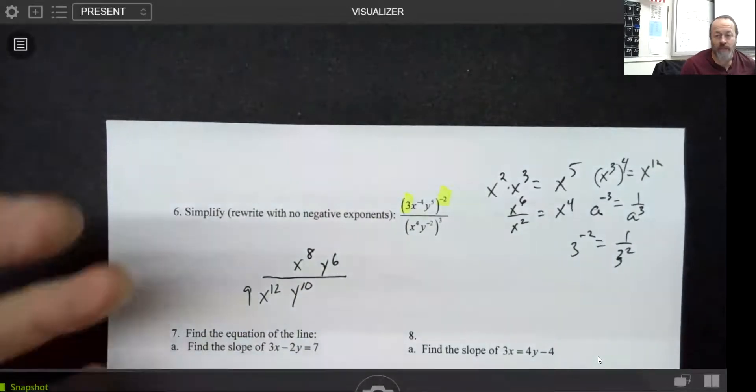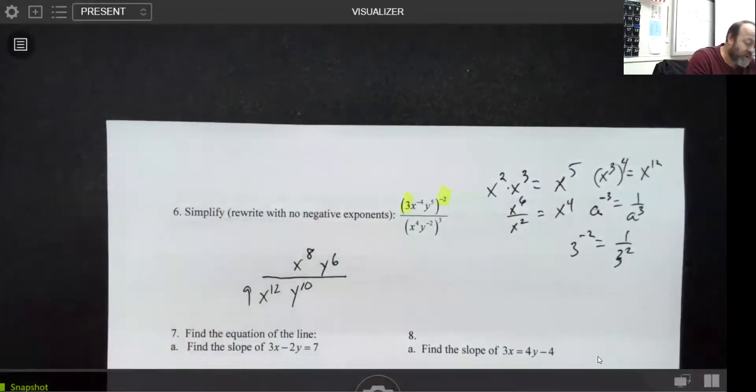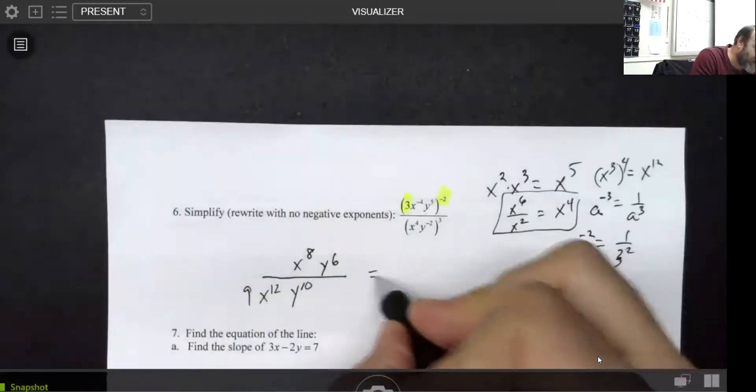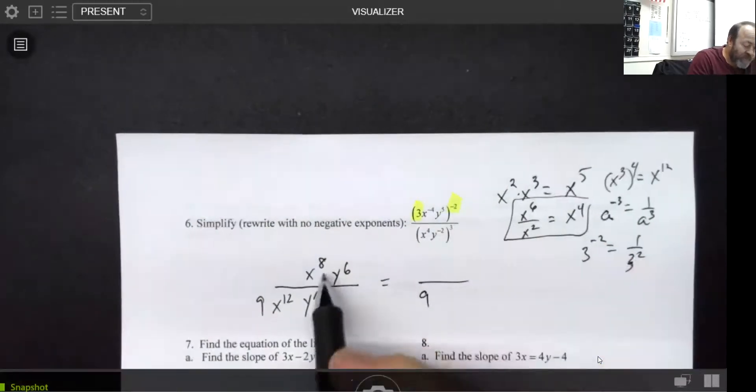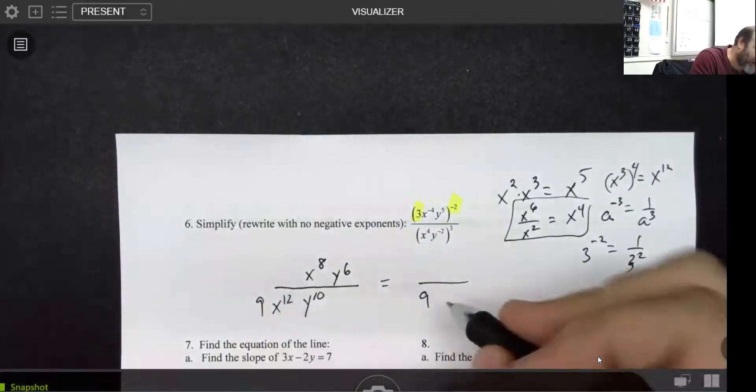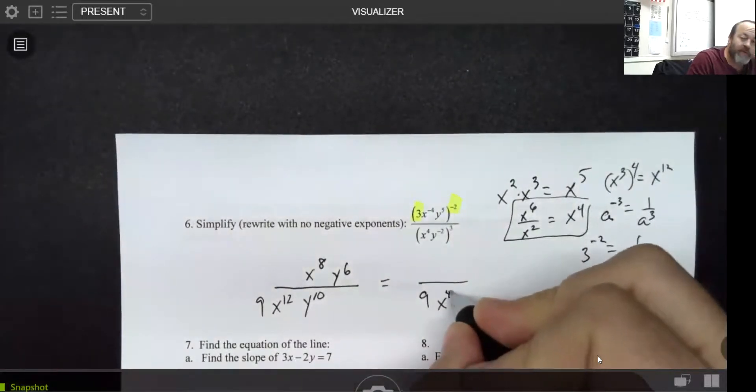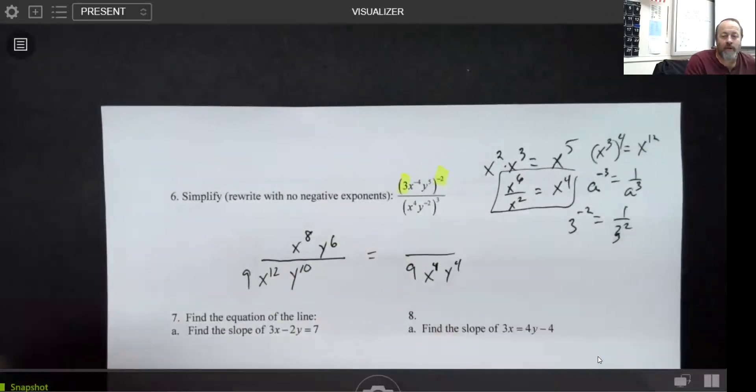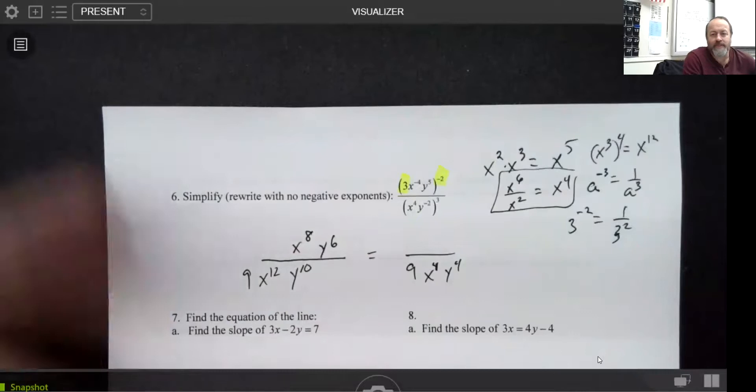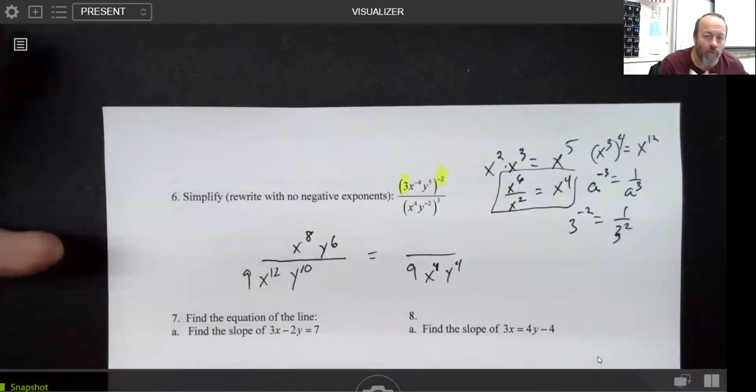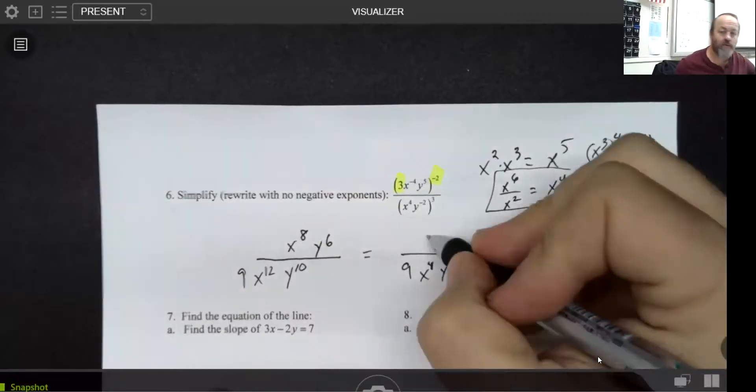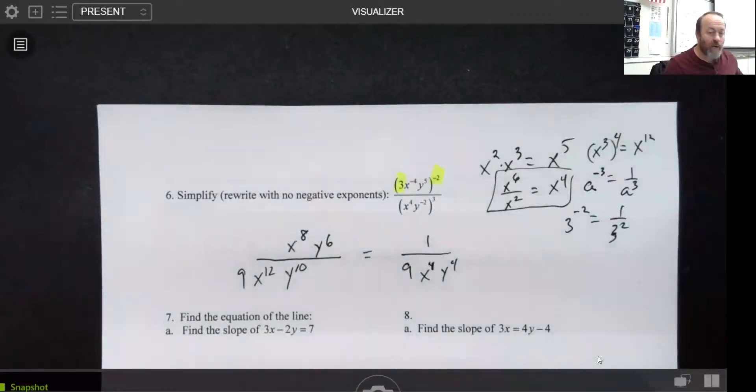And now we're pretty much set to go, because all I have left to do is exercise this last little rule right here, which says if there's eight x's on top and 12 of them in the bottom, that's going to leave x to the fourth in the denominator and y to the fourth similarly in the denominator. And I did this on purpose, because what happens if nothing's left on top? Well, you don't want to put a zero, because that would make the entire expression zero. So what we're going to do is we're going to put a one there.